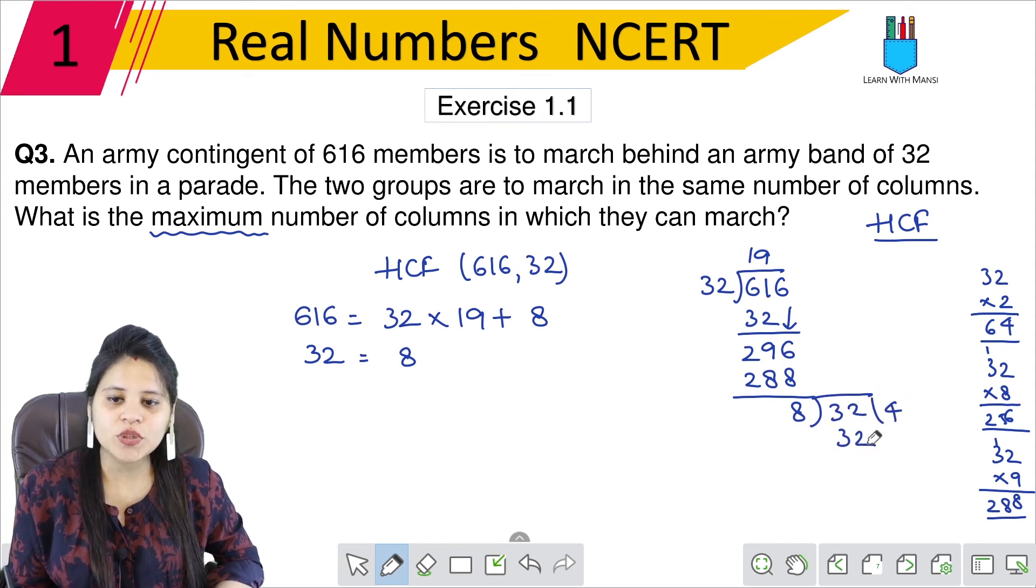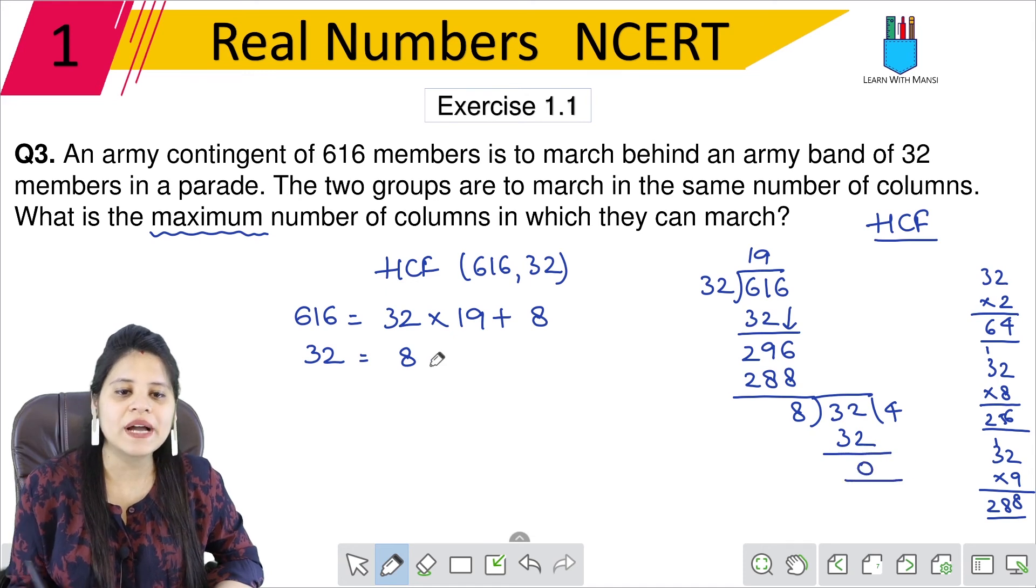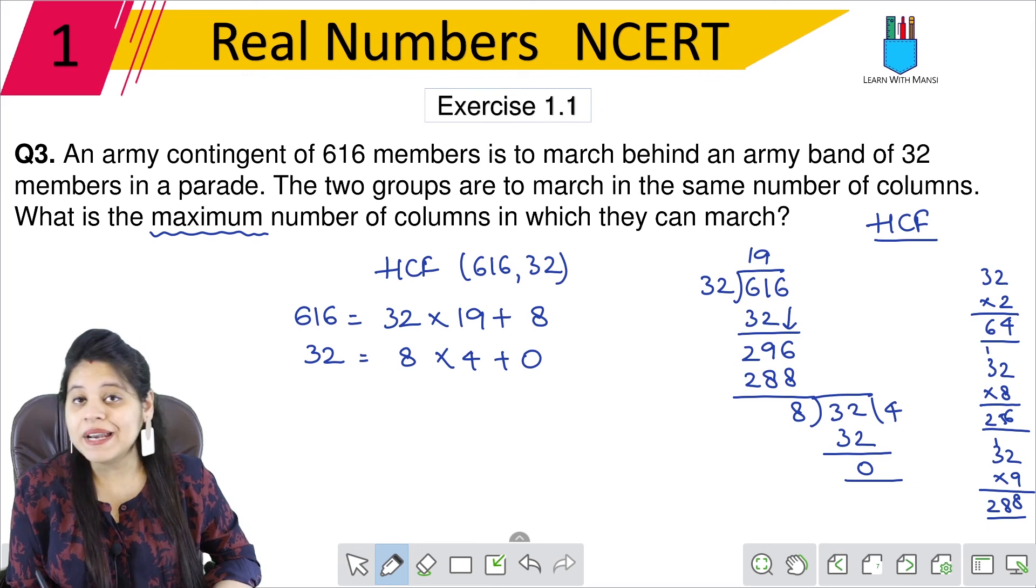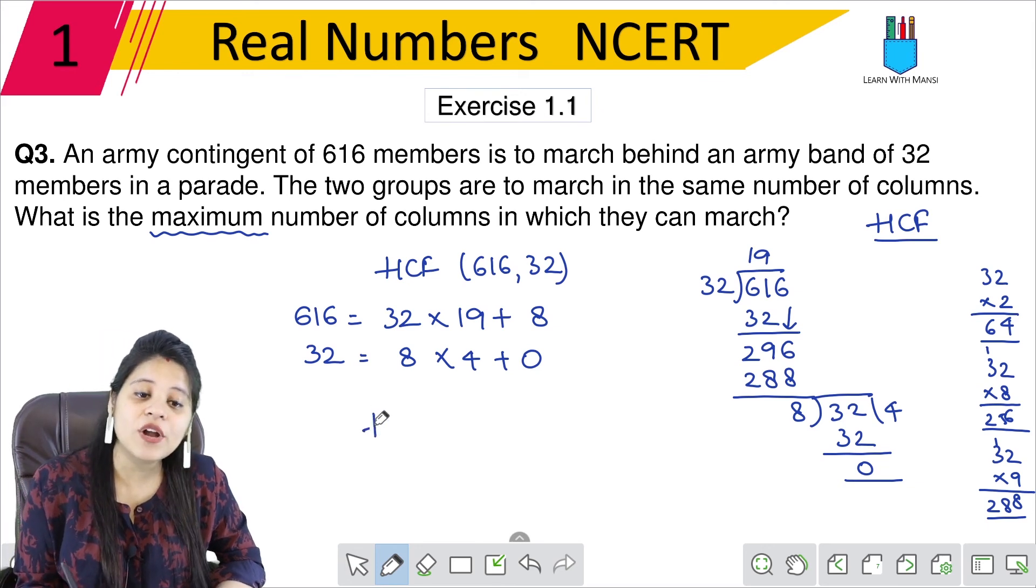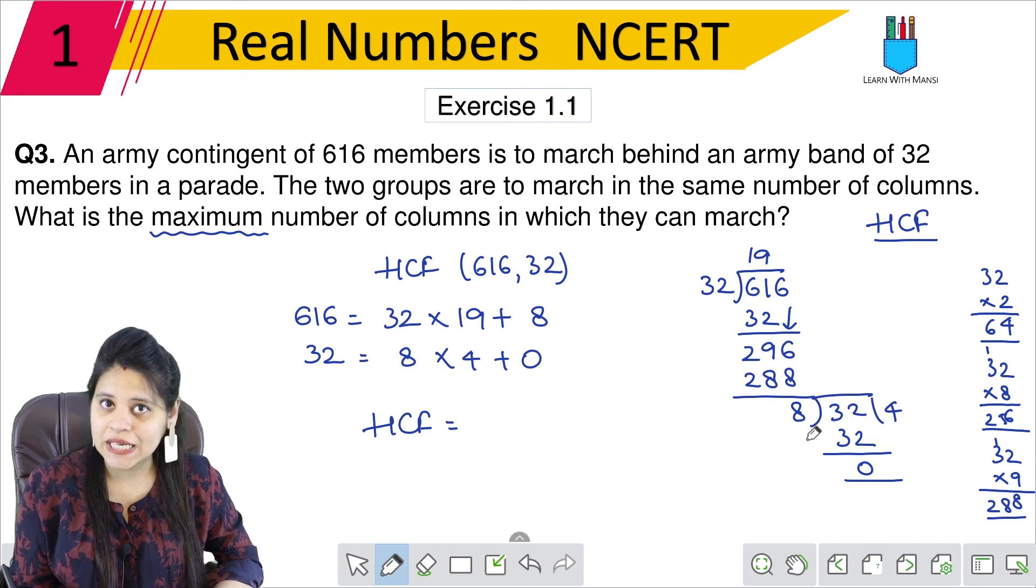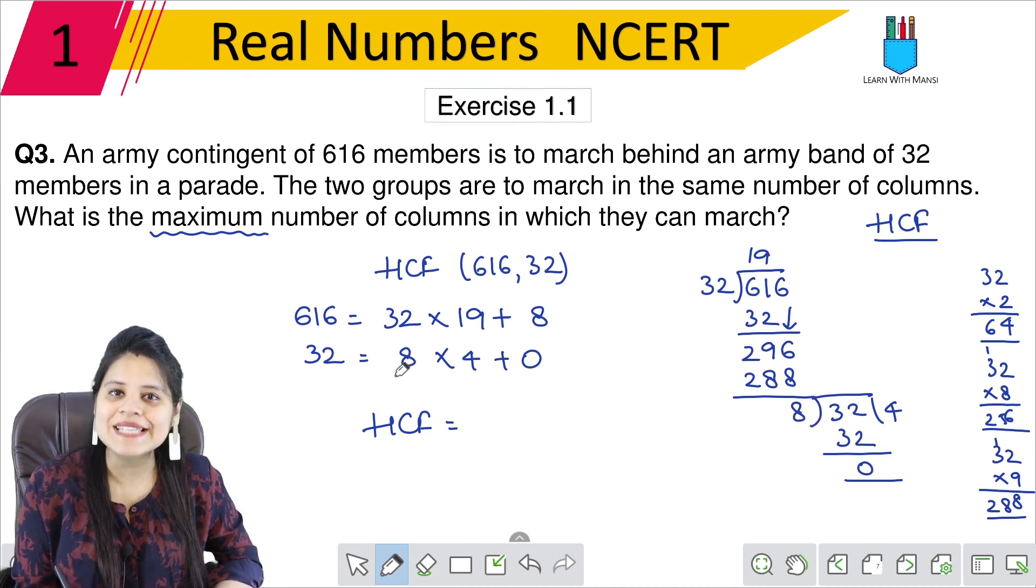8 into 4 is 32. That means this is 0. So 8 into 4 plus 0. 0 remainder is not going to do it. And what will HCF be? Last divisor. Which is the last step. That is 8. So HCF is 8.